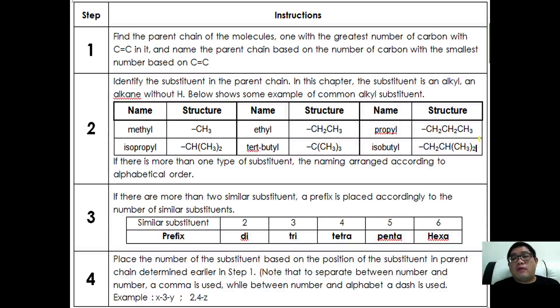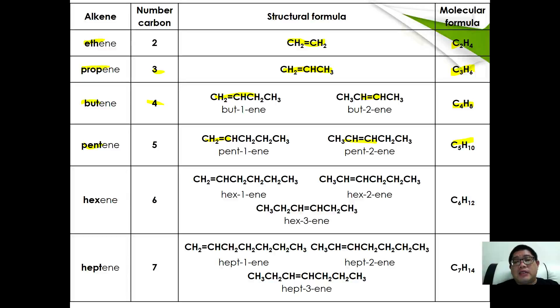Hexene has 3 isomers: hex-1-ene, hex-2-ene, and hex-3-ene, all with molecular formula C6H12. Finally, heptene with 7 carbons has hept-1-ene, hept-2-ene, and hept-3-ene with formula C7H14. For now, that is all for the introduction to alkene. We'll continue in our next video lesson about how to name them and their isomerism. With that, see you next video.